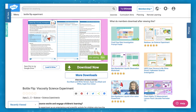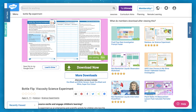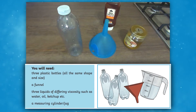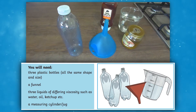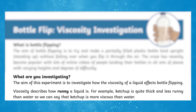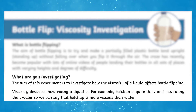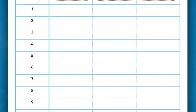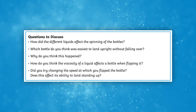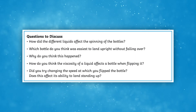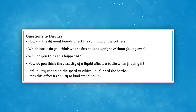Experiment number two: bottle flip viscosity science experiment. Using a bottle, a funnel and three liquids of different viscosities, children will investigate how the viscosity of a liquid — how thick a liquid is — affects bottle flipping. Similar to the previous resource, kids will fill in the table with the information before drawing a conclusion. They'll also answer discussion questions like: how do you think the viscosity of a liquid affects a bottle when flipping it? And why do you think this is happening?